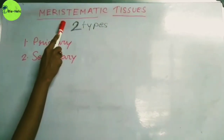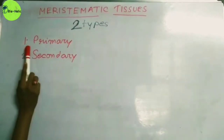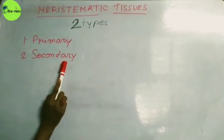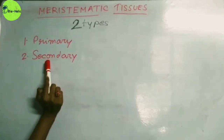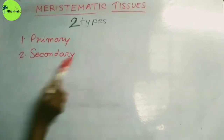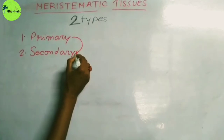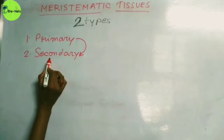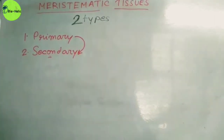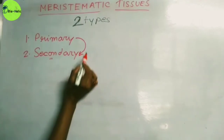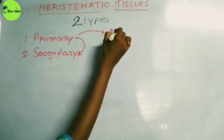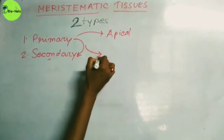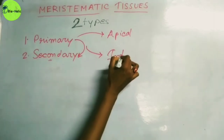The meristematic tissues are of two types: the primary meristematic tissue and the secondary meristematic tissue. The secondary meristematic tissue originated from the primary meristematic tissue. We can also divide the primary meristematic tissue into two types: the apical meristematic tissue and the intercalary meristematic tissue.